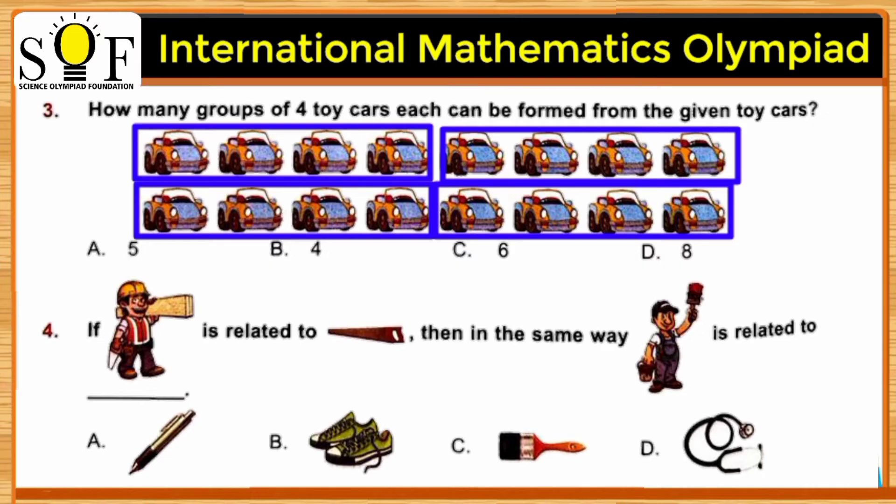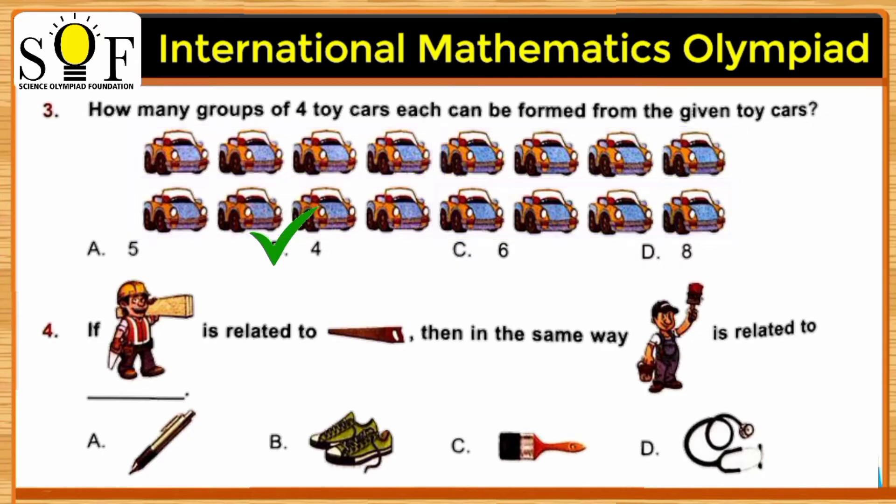So as we can see, each group has four toy cars, and we were able to form four groups. The answer is option B. Number four: if a carpenter is related to a saw, then in the same way, a painter is related to what? We need to see what is the tool that is used by a painter.